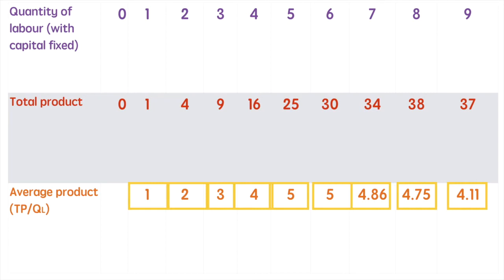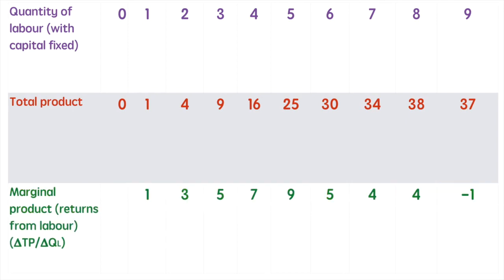Next, let's look at marginal product and see what each additional unit of labour adds to the total. Marginal product, or the additional product produced by the next worker, is measured by the change in total production divided by the change in the quantity of labour. The quantity of labour is consistently 1 in this example, so we only need to look for the change in the quantity of production as each worker is added.